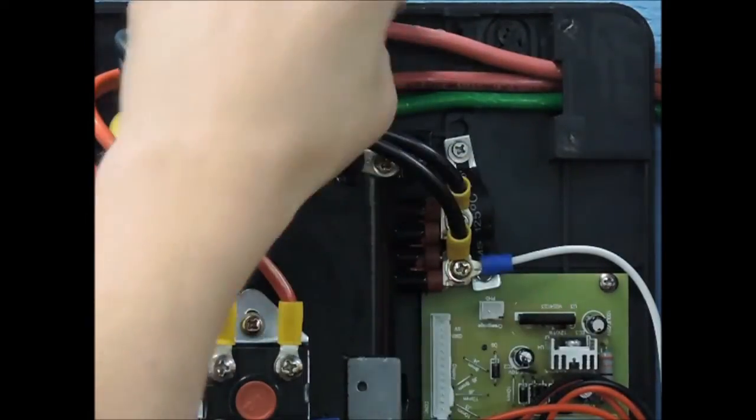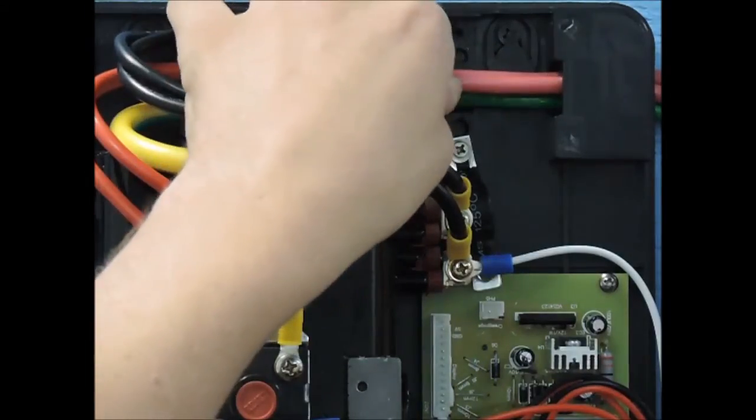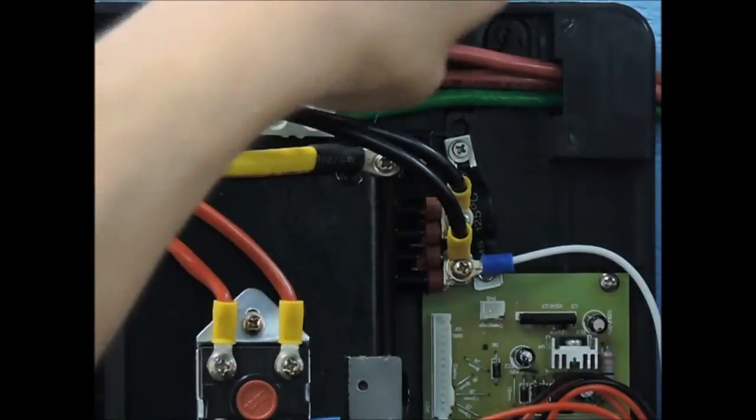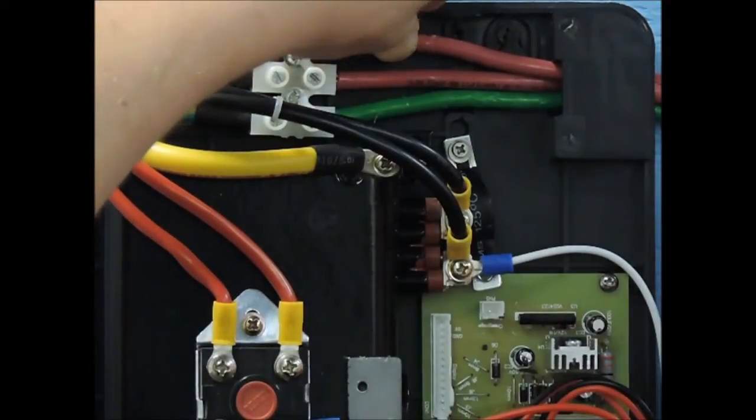Then, run one 6 gauge wire from each of the L1 and L2 connection points of the terminal block to the double pole 60 amp breaker at your panel.